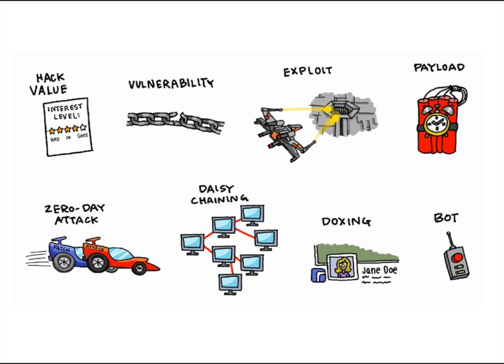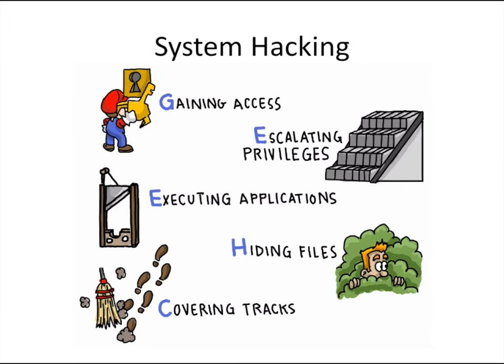Once we target a specific system, there are five system hacking phases: gaining access, escalating that access, running programs like remote control apps, rootkits, or other software to maintain access and gather information. We don't want to be caught, so we hide files and cover our tracks — including log files. We might turn off auditing as the very first thing once we own the system, and then turn it back on when done, making it harder for anyone to know what was done to compromise their network.